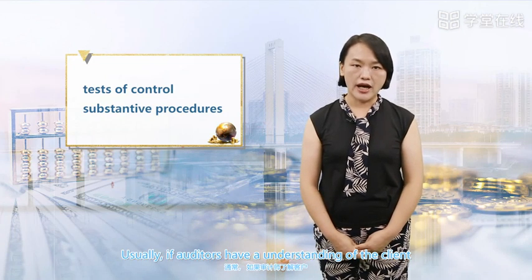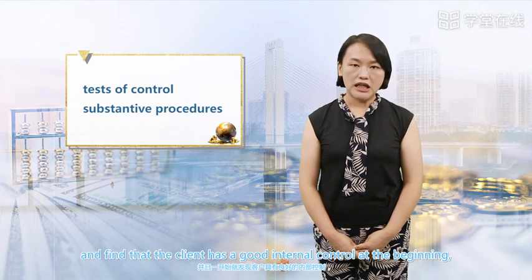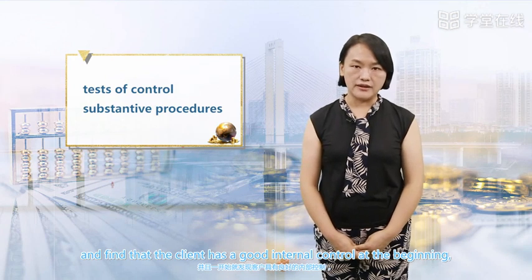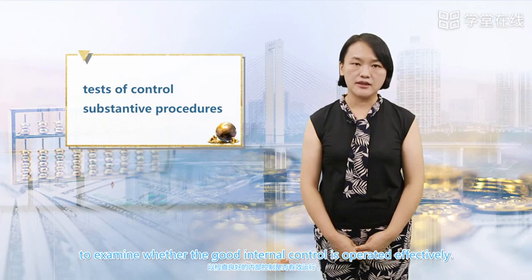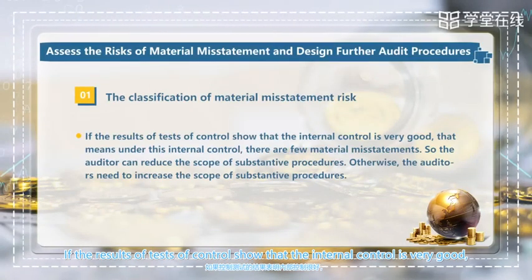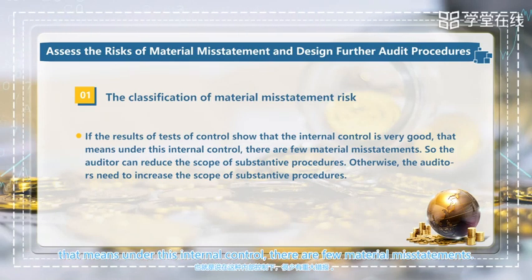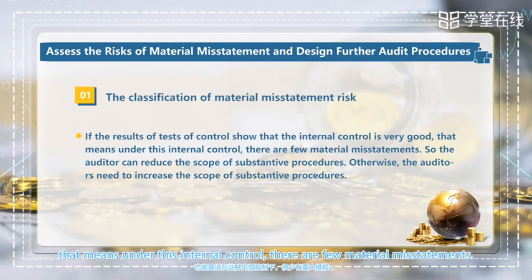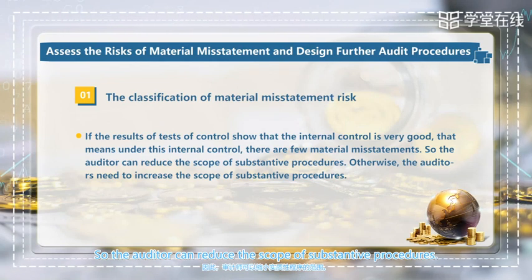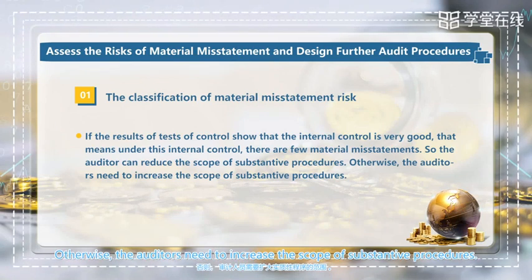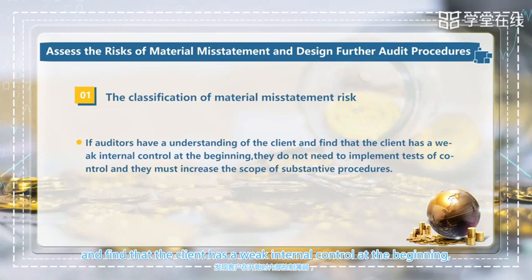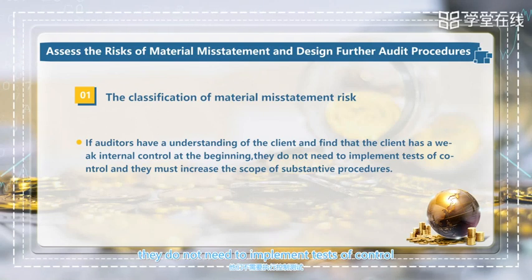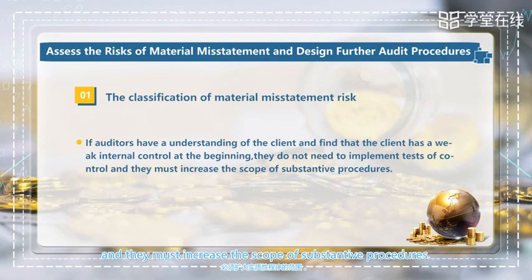Usually, if auditors have an understanding of the client and find that the client has good internal controls at the beginning, they will implement tests of controls to examine whether those controls are operating effectively. If the results of the tests of controls show that the internal controls are very good — meaning there are few material misstatements — the auditors can reduce the scope of substantive procedures; otherwise, they need to increase the scope of substantive procedures. If auditors find that the client has weak internal controls, they do not need to implement tests of controls and must increase the scope of substantive procedures.